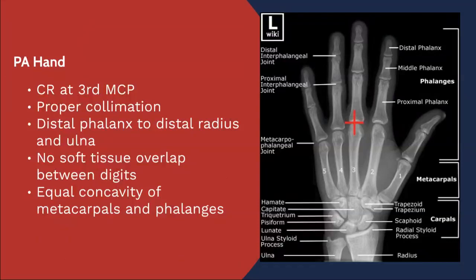Evidence of proper collimation will include pretty much everything from the distal phalanx to the distal radius and ulna. There should be no soft tissue overlap between the digits, so the fingers are equally spaced out if the patient can allow for that. To evaluate for obliquity of the second through fifth digits, there should be an equal concavity between the metacarpal and phalangeal bodies — they look equally concave on either side.